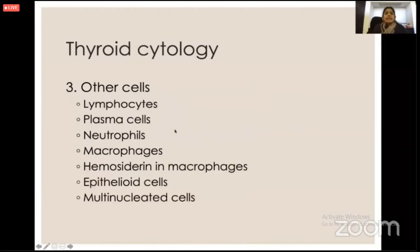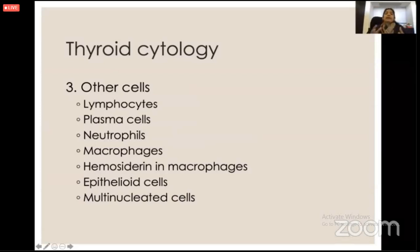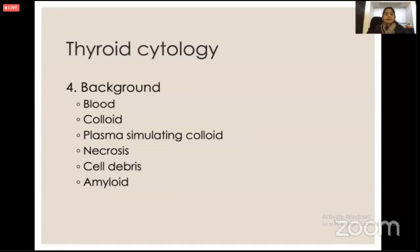Other cells to examine include inflammatory cells, hemosiderin pigments, epithelial cells, and giant cells. All these help me reach a final diagnosis, so never forget those other cells in the sample.